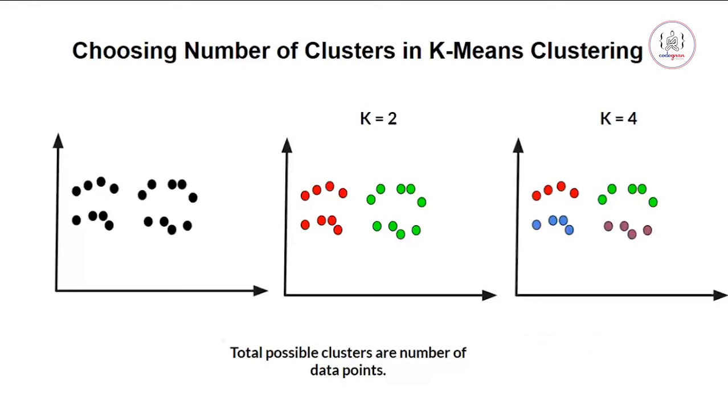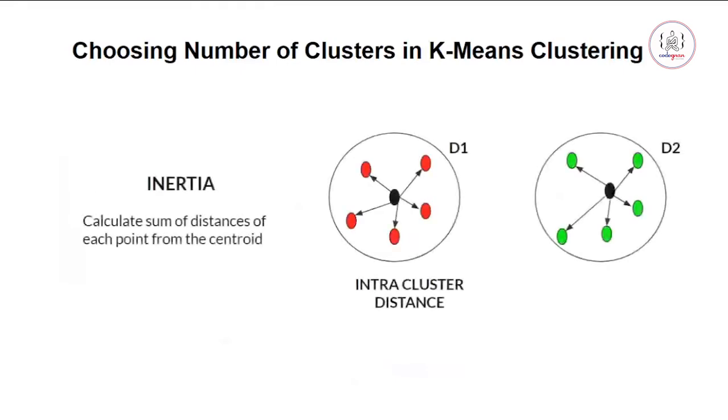Now how do we know which k value will give us the correct groups or correct number of groups? So for that, what we do is we evaluate our clusters. We should have a metric where we can evaluate our clusters, so we do that using inertia.